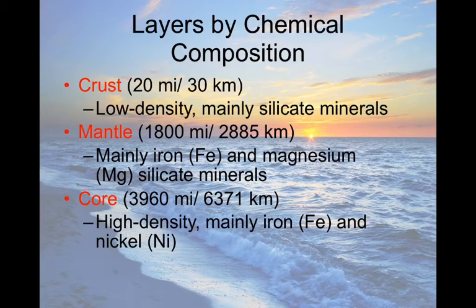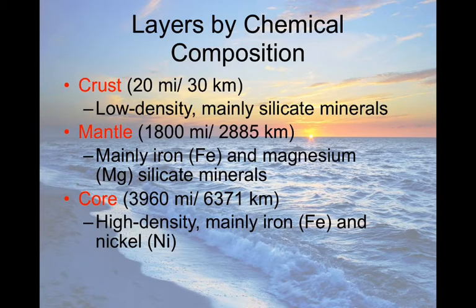The core is very high density — a density that's probably impossible for us to imagine — and while it's incredibly dense, it's also liquid and superheated to roughly the same temperature as the surface of the sun. The core is almost 7,000 kilometers down and is composed of iron and nickel.